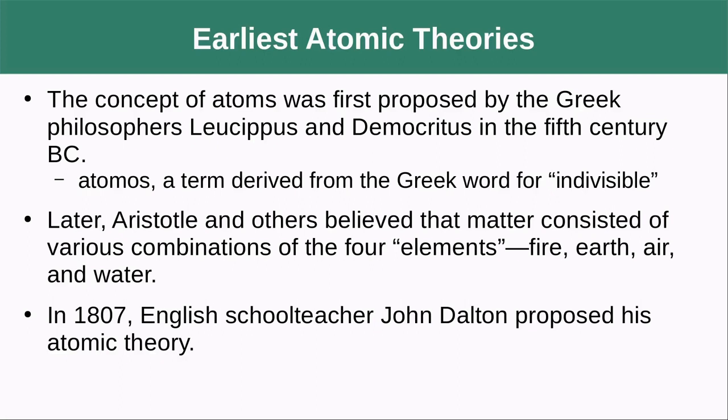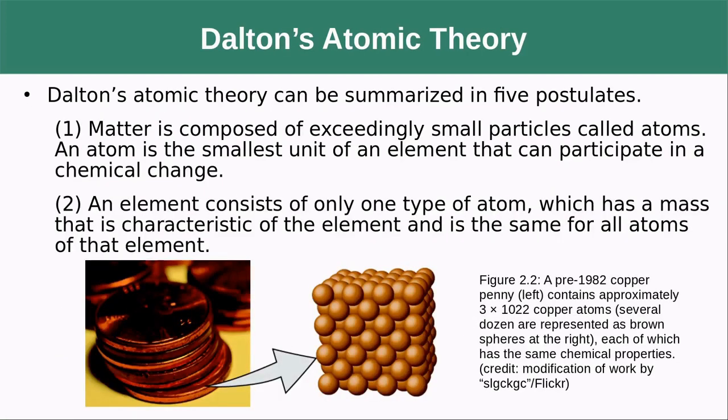They were on the right track, but this wasn't really formalized until 1807 by an English schoolteacher named John Dalton. Dalton's atomic theory has five postulates. The first is that matter is composed of exceedingly small particles called atoms. An atom is the smallest unit of an element that can participate in a chemical change.